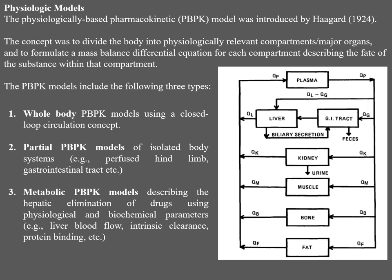The metabolic PBPK model is mainly concerned with hepatic elimination of drugs. Examples include liver blood flow, intrinsic clearance, and protein binding. The main equation explaining the metabolic PBPK model is the Michaelis-Menten equation. In the closed loop circulation diagram you can see plasma and different organs like liver, GI tract, kidney, muscle, bone, and fat. QM, QK, QB are blood flow rates — Q corresponds to blood flow rate from one compartment to another, and each subscript corresponds to the individual organ blood flow rate.